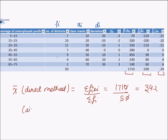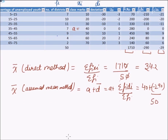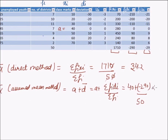By the assumed mean method, x̄ = a + Σfidi / Σfi. The assumed mean a = 40, so x̄ = 40 + (−290 / 50) = 40 + (−5.8) = 40 − 5.8 = 34.2.